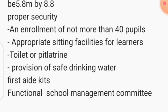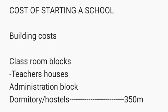Now let's look at the total cost of setting up a school here in Uganda. This cost excludes buying land — we assume you already have land. Building costs will include classroom blocks, teachers' houses, administration block, and dormitory or hostels. This can cost roughly around 350 million Ugandan shillings on an average budget — it can be slightly lower on a tight budget or higher, but averagely 350 million for all these essential blocks.